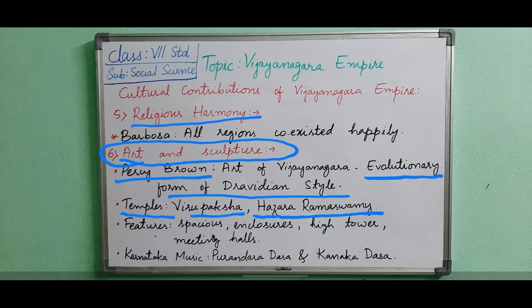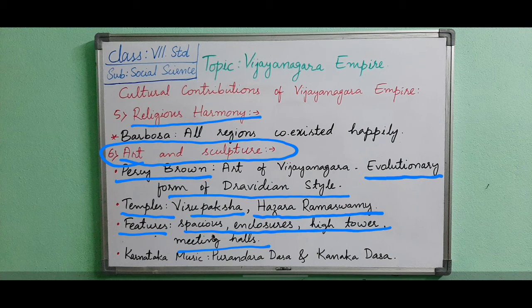Now we will see the features of these temples. Firstly, they have very spacious enclosures — spacious means large. They also had high towers, marriage halls, and meeting halls. The key features to remember are: great gates and enclosures, high towers, marriage halls, and meeting halls.